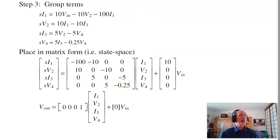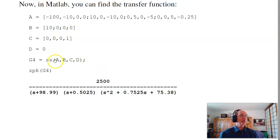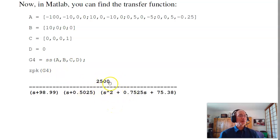I can throw that into MATLAB and find the transfer function. In MATLAB, I input A, B, C, D, input the system as state space — I use g4 to indicate this is a fourth-order system. Once I have the system in MATLAB, I find the transfer function in terms of zeros and poles, and there it is. From that, I can tell how it's going to behave. Here's my dominant pole. The settling time would roughly be 4 over 0.5, about 8 seconds.